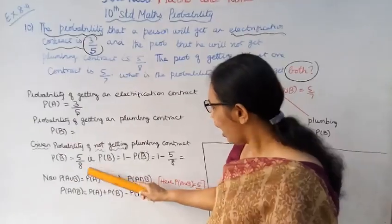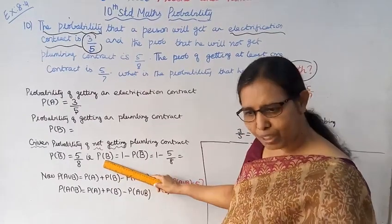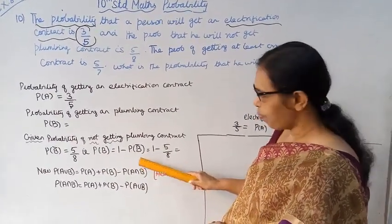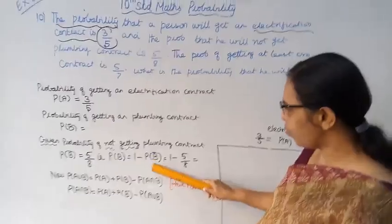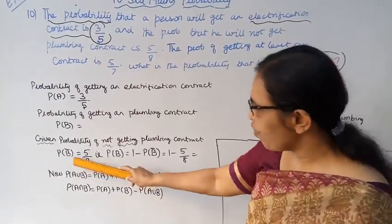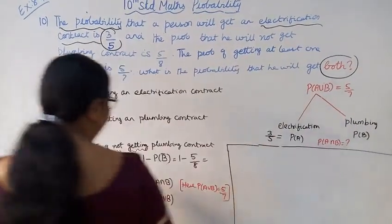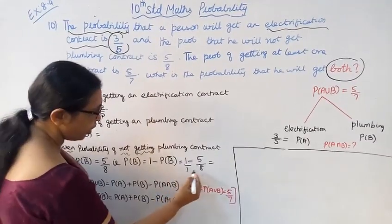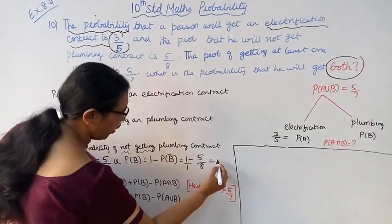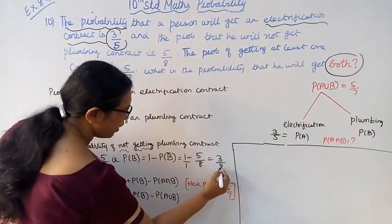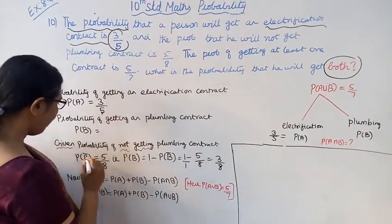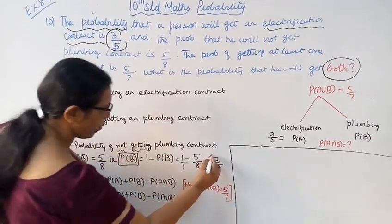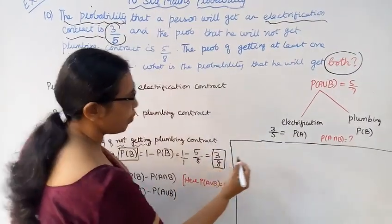We need to find P(B). Using the formula P(B) = 1 - P(B bar), we get P(B) = 1 - 5/8. That equals 8 minus 5, which is 3/8. So P(B) = 3/8.